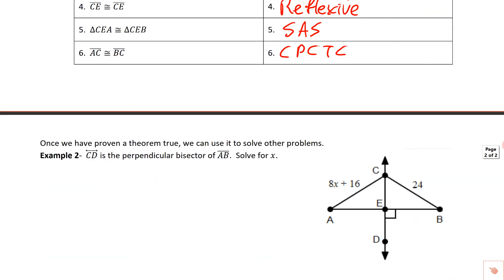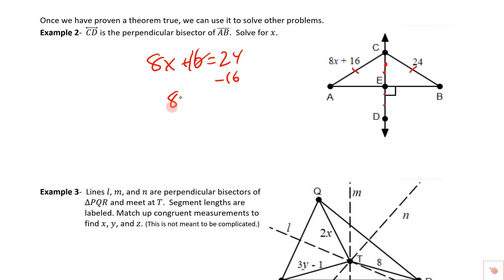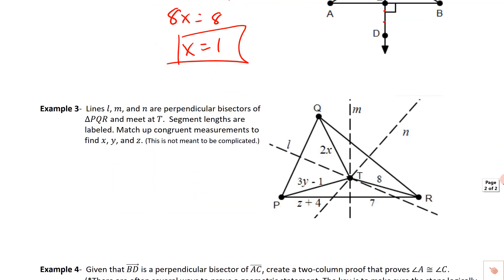Once we've proven a theorem true, we can use it to solve other problems. Line CD is the perpendicular bisector of segment AB — solve for X. Using the theorem, any point on the perpendicular bisector is equidistant from the endpoints, so we just set the two expressions equal: 8X plus 16 equals 24. Subtracting 16 gives 8X equals 8, so X equals 1. That quickly we can apply the theorem, knowing those two distances have to be equal because this point is on the perpendicular bisector.